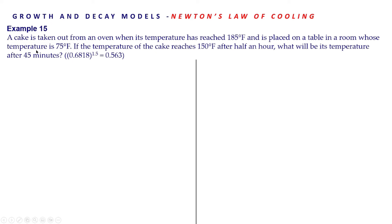Here is an example for Newton's law of cooling: A cake is taken out from an oven when its temperature has reached 185°F and is placed on a table in a room whose temperature is 75°F. If the temperature of the cake reaches 150°F after half an hour, what will be its temperature after 45 minutes?